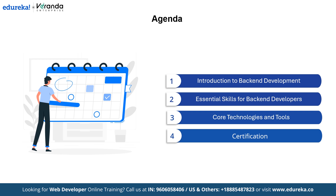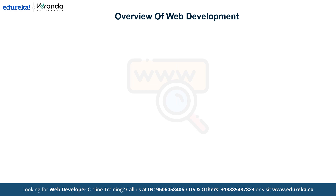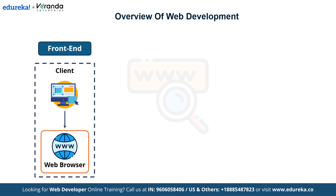To begin our journey into backend development, let's start by understanding the overview of web development. Web development is divided into two parts: the frontend and the backend. The frontend is what the user directly interacts with, including the client — that is the user's device — and the web browser. Elements like buttons, text and images on websites are present in the frontend part.